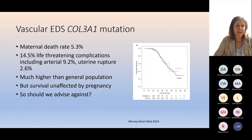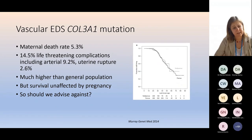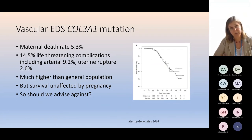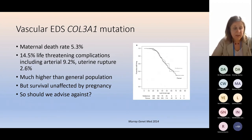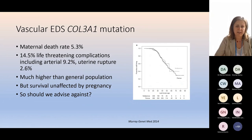Vascular EDS: the maternal death rate is 5% and there is a significantly high rate of life-threatening complications — not only cardiovascular but including uterine rupture — which is much higher than the general population. Interestingly, overall survival with vascular EDS is unaffected by pregnancies — no difference in survival between women who've had pregnancies and those who haven't. So although the complication rate is high, one must ask whether that is the complication rate she would have had anyway over her lifetime. It's a difficult philosophical discussion, but current advice is that you should advise against pregnancy.